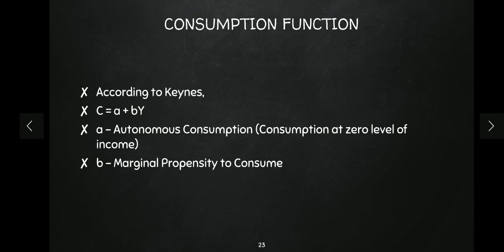For example, if my income is 100 rupees then my consumption may be 80 rupees, and if my income is 200 rupees then my consumption may be 150 rupees. So consumption depends on the level of income. This is why the consumption function is written as a + bY. Here, 'a' is autonomous consumption — meaning even at zero level of income, a person will still consume something because some consumption is required for survival, whether they borrow, beg, or find other means.